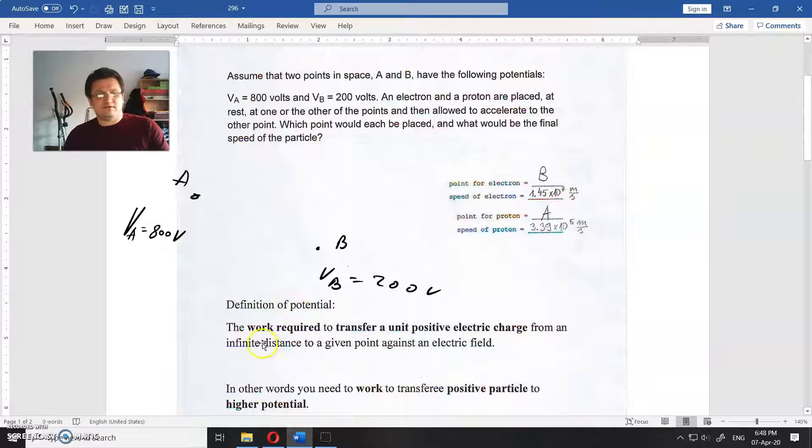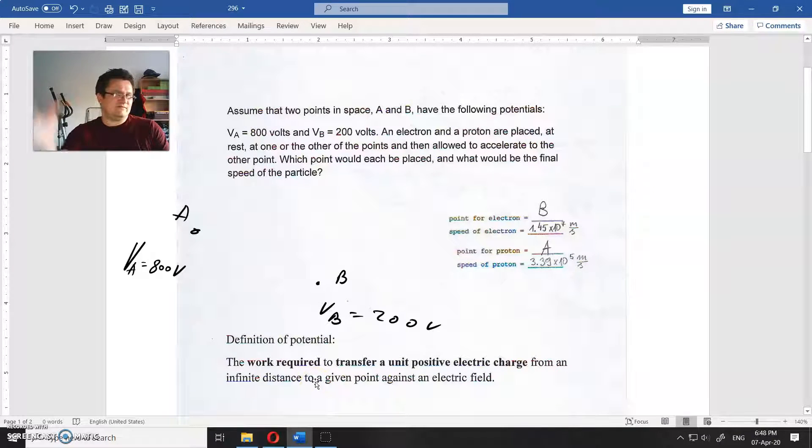First of all, let us see what is the definition of potential. That is work required to transfer a unit positive electric charge from an infinite distance to a given point against an electric field.